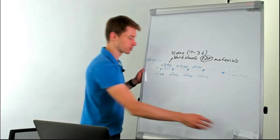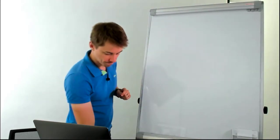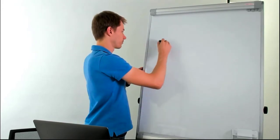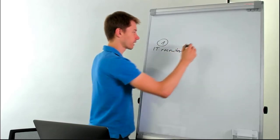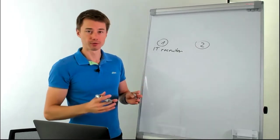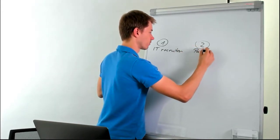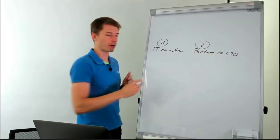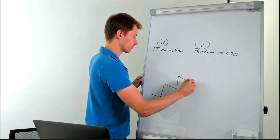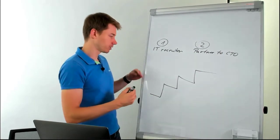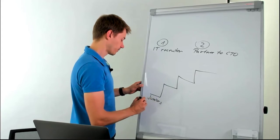With this training I'd love for you to get to a level where you can eventually be a partner to CTOs. So the path: first, you need to become a really great IT recruiter. Second — not all of you, but this is where you can bring real value — is to become a partner to a CTO. Recruiters typically start as juniors, or 'freshers,' with not much background in IT.